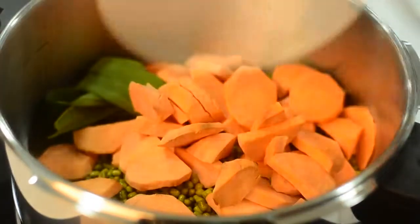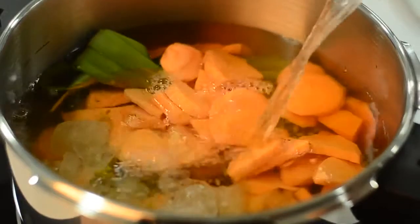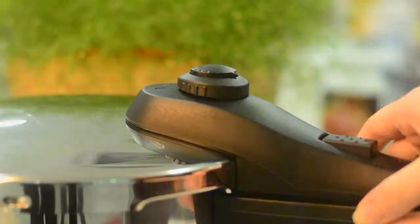Next, add the sweet potatoes and rock sugar. Then add water. Close the lid, turn the valve to position 2, and let it cook for about 5 minutes.